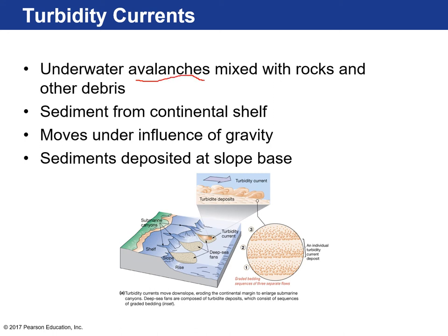We call those turbidity currents — essentially underwater avalanches. Imagine a snow avalanche: heavy snow on the bottom and light wispy snow on top, moving down together, carrying small rocks, gravel, and tiny debris — just broken-down sediment from the continental shelf — moving under the influence of gravity. These sediments are deposited at the slope base near the continental rise. Here, the shelf and submarine canyons cutting through it are visible, and those deposits form deep-sea fans out in the ocean.